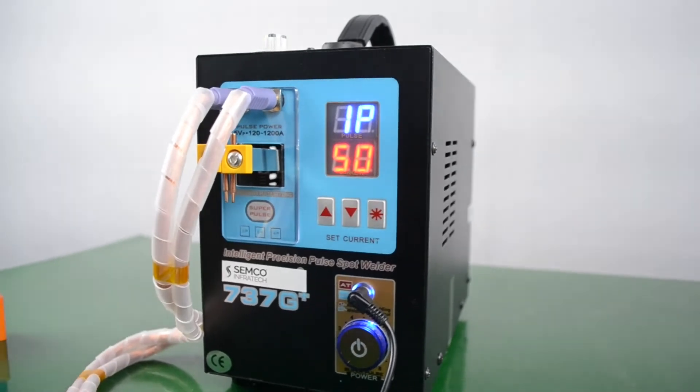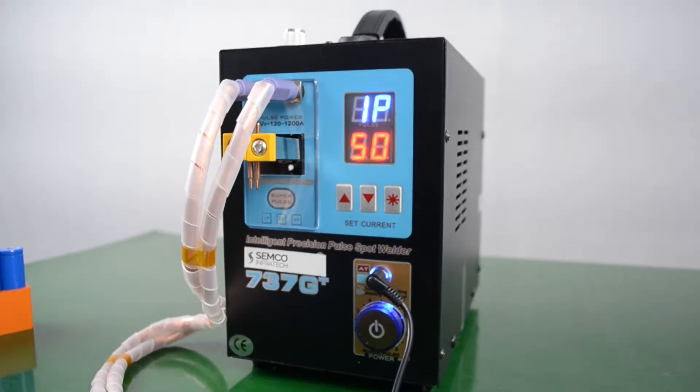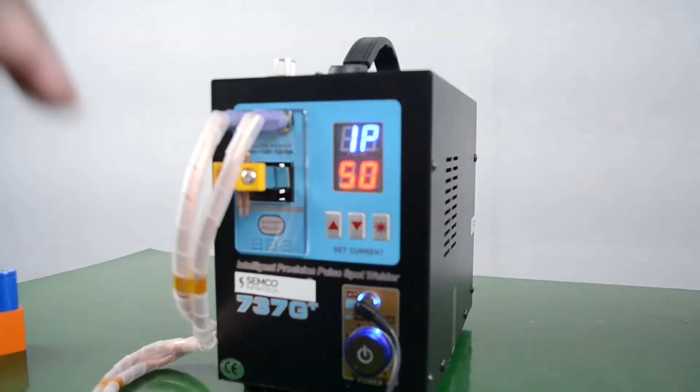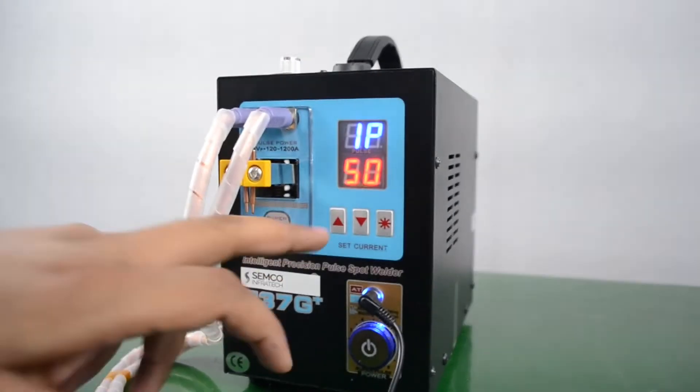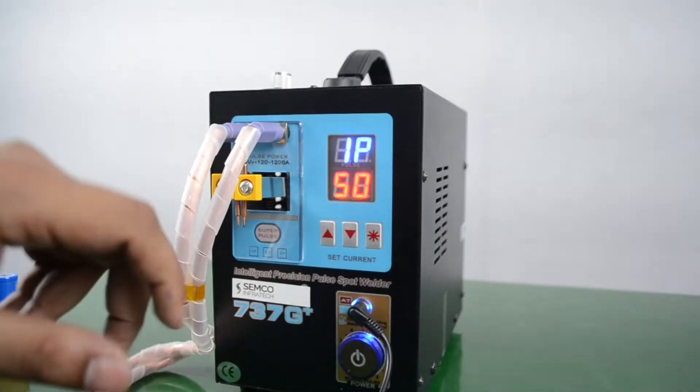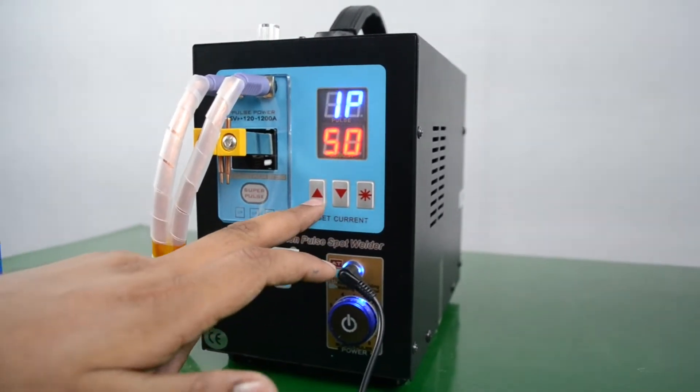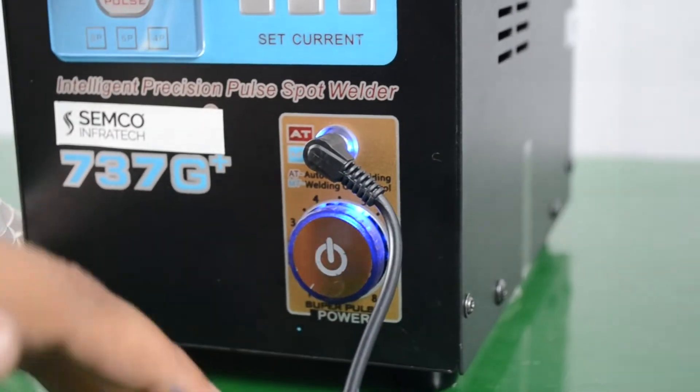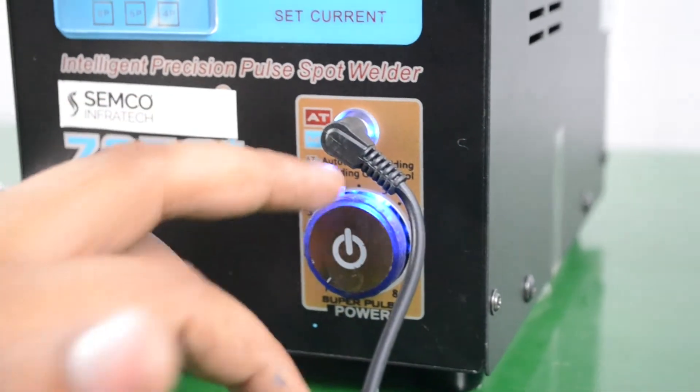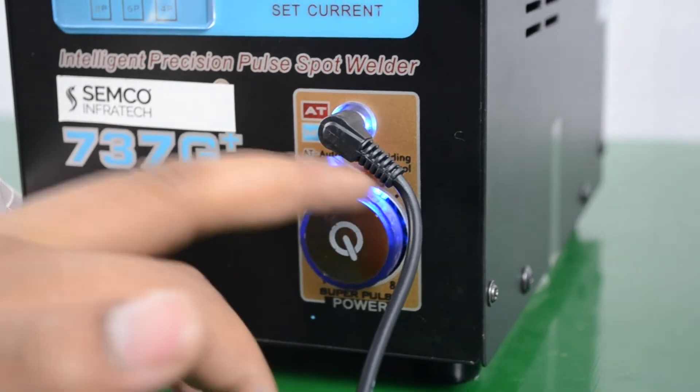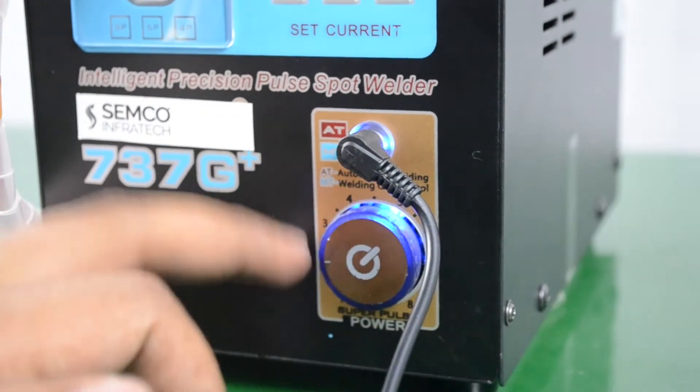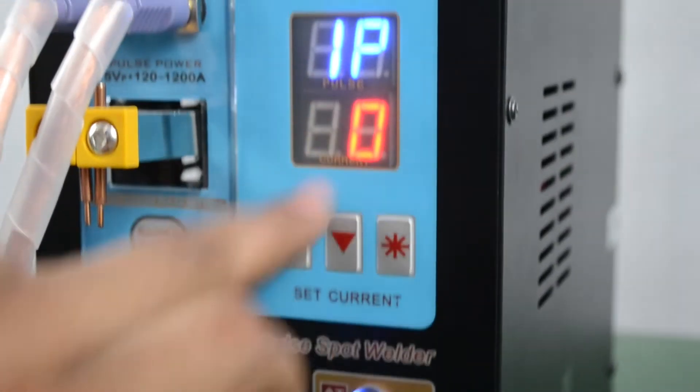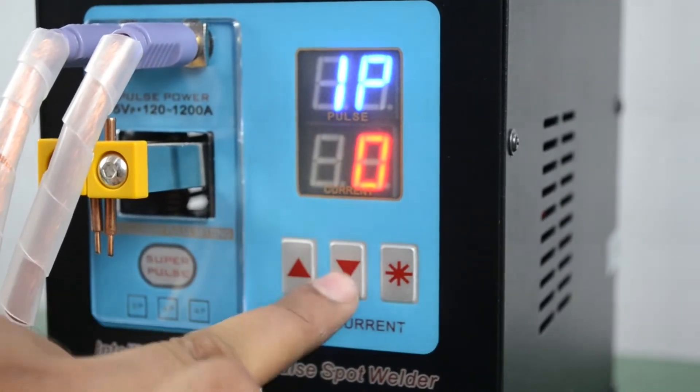Now let's talk about the working principle of this machine and the buttons. This is our LED display - this one shows the welding percentage current of the machine and this one shows the pulse. This button is for up and down, this is the selection switch, and this is our power switch which is now on. This is our pulse selector switch, so if you press this, we can set it as per our requirement.